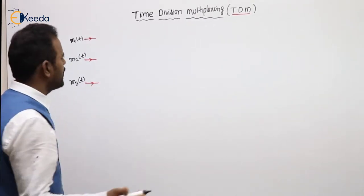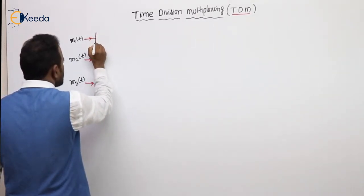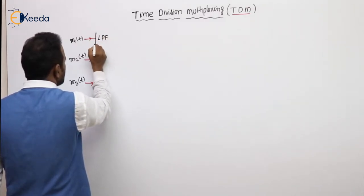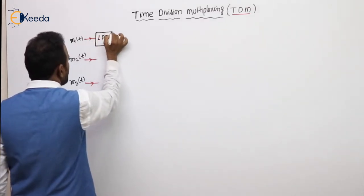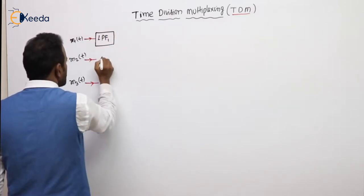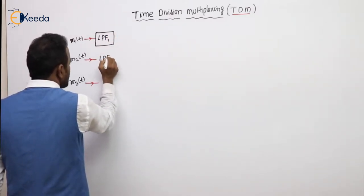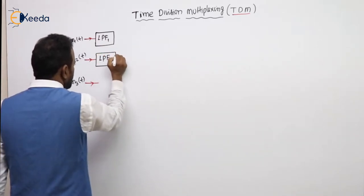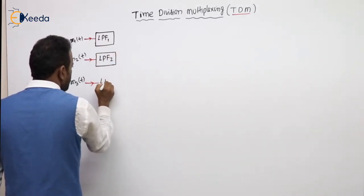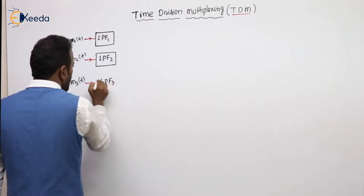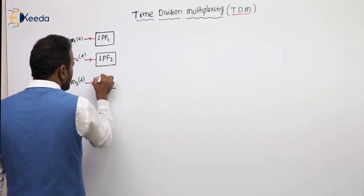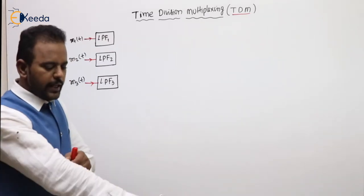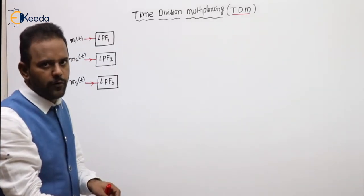The first block, as we already know, is nothing but a low pass filter, also called anti-aliasing filter. What it will do is band-limit the respective messages to a particular frequency — up to where it is having significant frequencies.